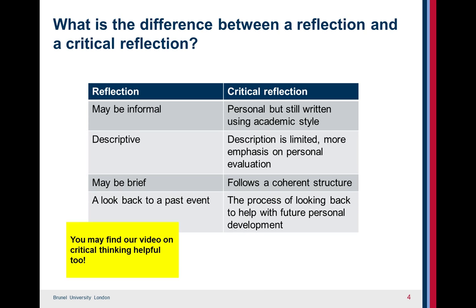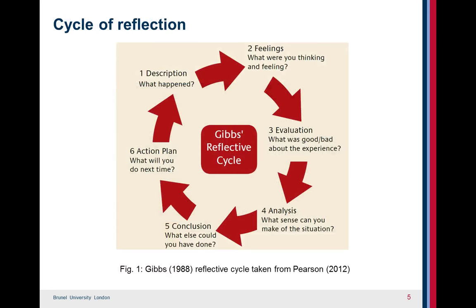You might also find our video on critical thinking helpful too. Here is a cycle of reflection by Gibbs. Let's start from the top left hand corner where you're simply describing what happened. Stage two is where you're thinking about the feelings you felt during the situation. Stage three, you're going into the realm of analysis — what was good and bad about the particular experience?